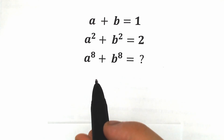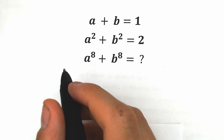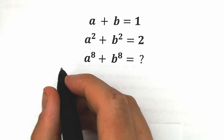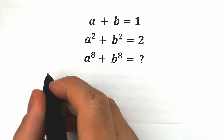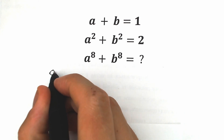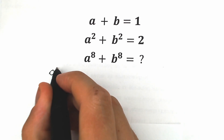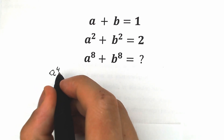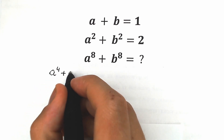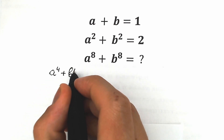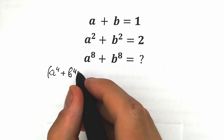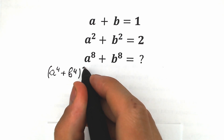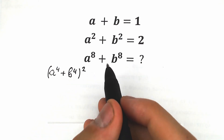First of all, let's find this expression: a to the 4th power plus b to the 4th power. Then let's square that expression to get closer and closer to the 8th power.